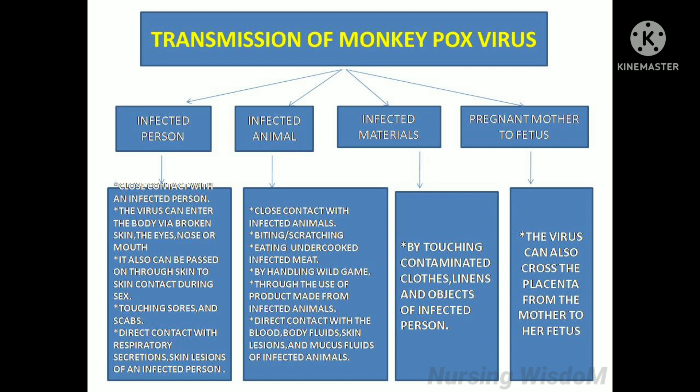Human-to-human transmission occurs from close contact with an infected person. The virus can enter the body via broken skin, the eyes, nose, or mouth. It can also be passed on through skin-to-skin contact during sex, touching sores and scabs, and direct contact with respiratory secretions or skin lesions of an infected person.